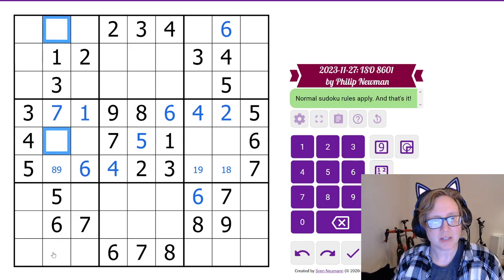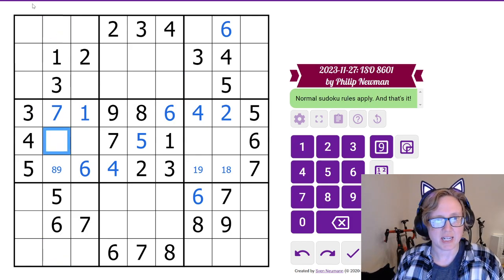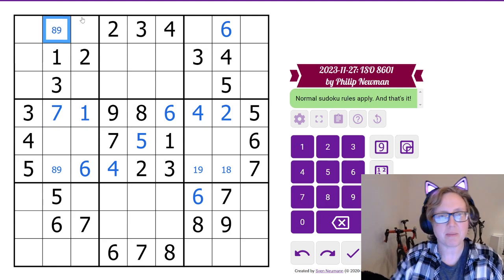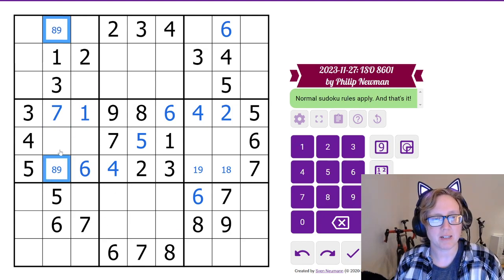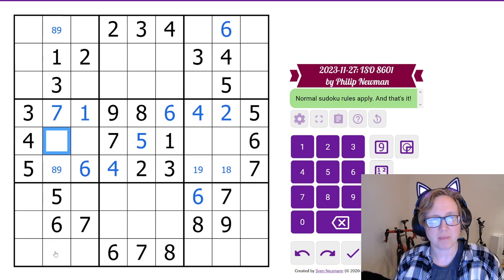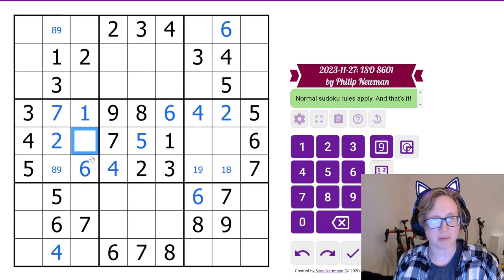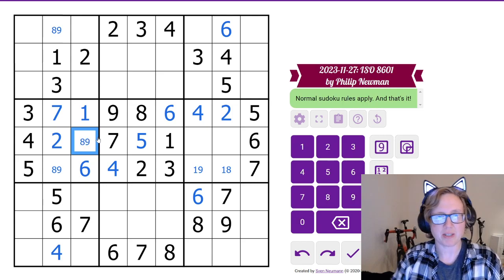Vertically here, I still need 2, 4, 8, and 9. So this can only be 8 or 9. That gives me an 8, 9 pair. So these two cells have to be my 2 and my 4 in some order. There's already a 4 in this region, so that's my 2, that's my 4. And then this is also either an 8 or a 9.